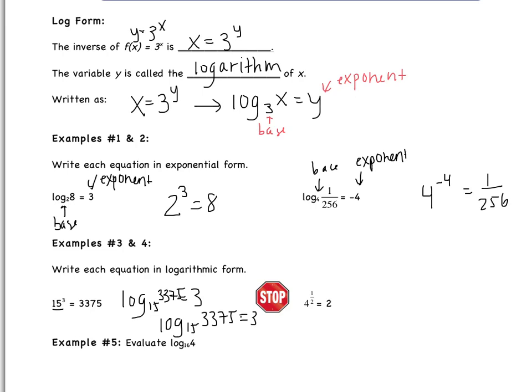Pause the video and try the next one on your own, please. Example 4. Okay, let's see how we did. It should have been log base 4 of 2 equals 1 half. So again, 4 is the base. 1 half is the exponent.